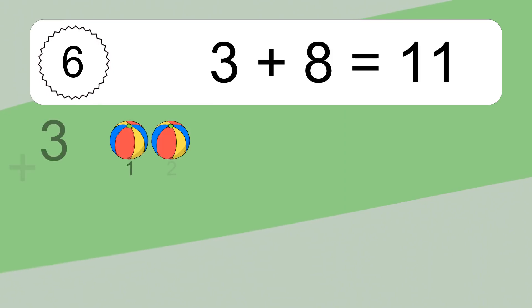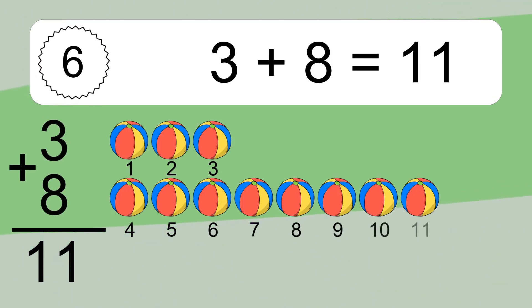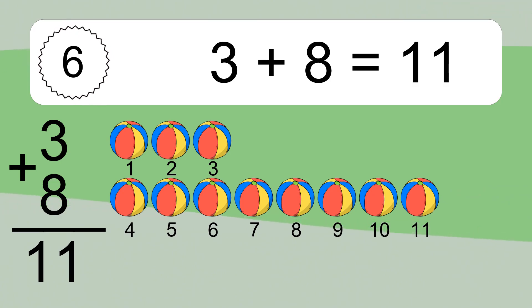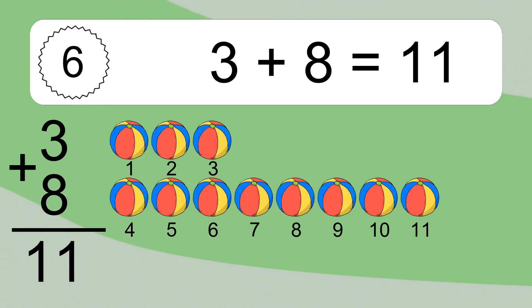3 plus 8 equals what? 3 plus 8 equals 11. Let's count it. 1, 2, 3, 4, 5, 6, 7, 8, 9, 10, 11.